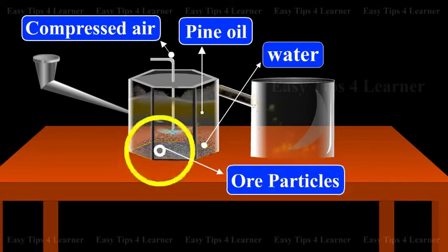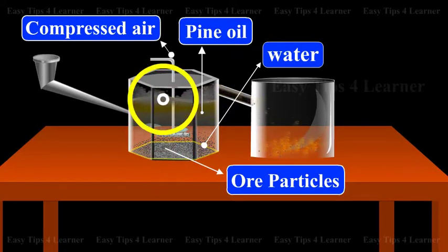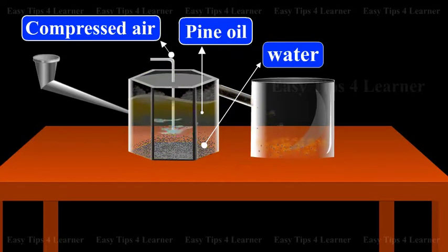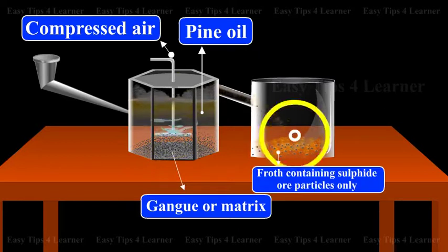The ore particles stick to the froth which rises to the surface, while the rocky and earthy impurities, that is the gangue or matrix, are left in the water. The froth is skimmed or collected and allowed to subside to get a concentrated ore.